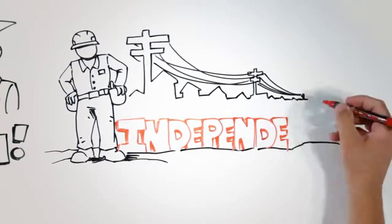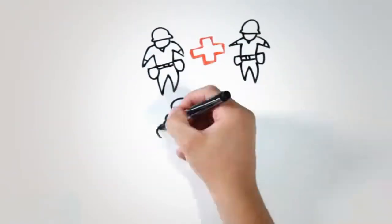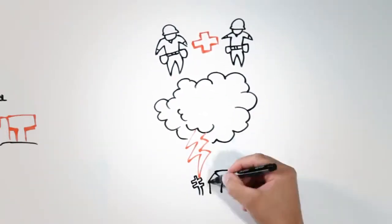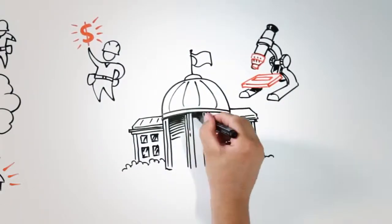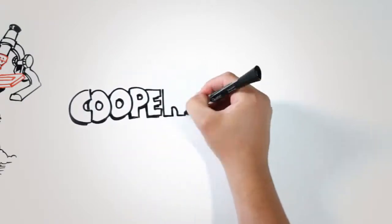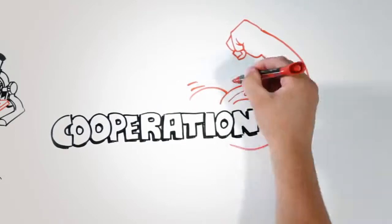But cooperatives also work together. They join forces to restore outages after storms, get financing, do research, and speak up in the halls of government. We call this hallowed principle cooperation among cooperatives. It's what makes us strong.